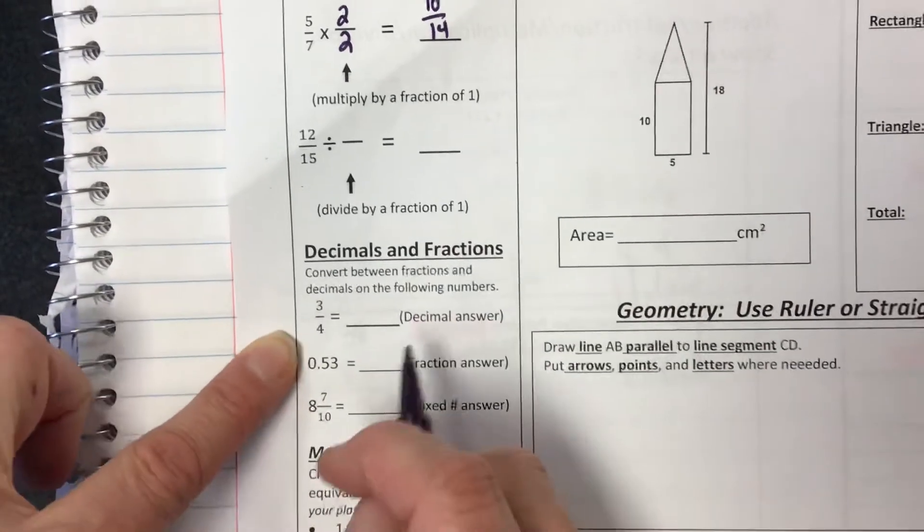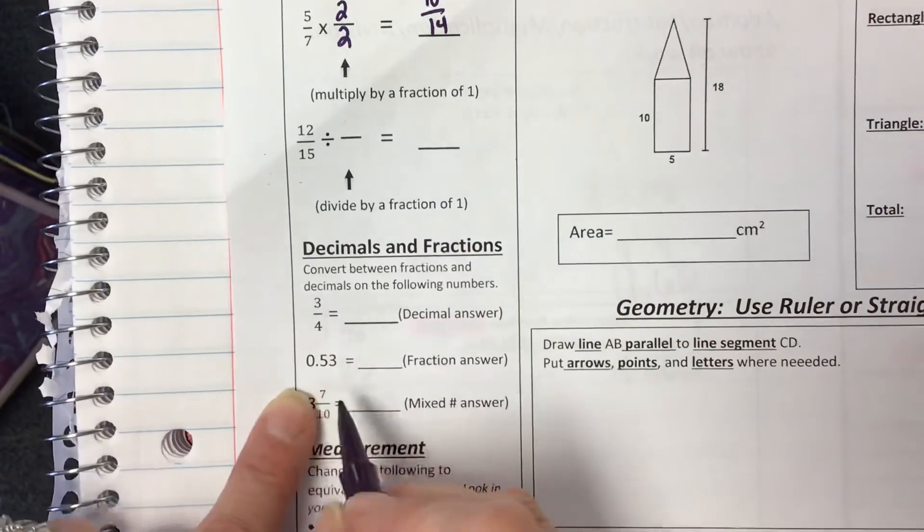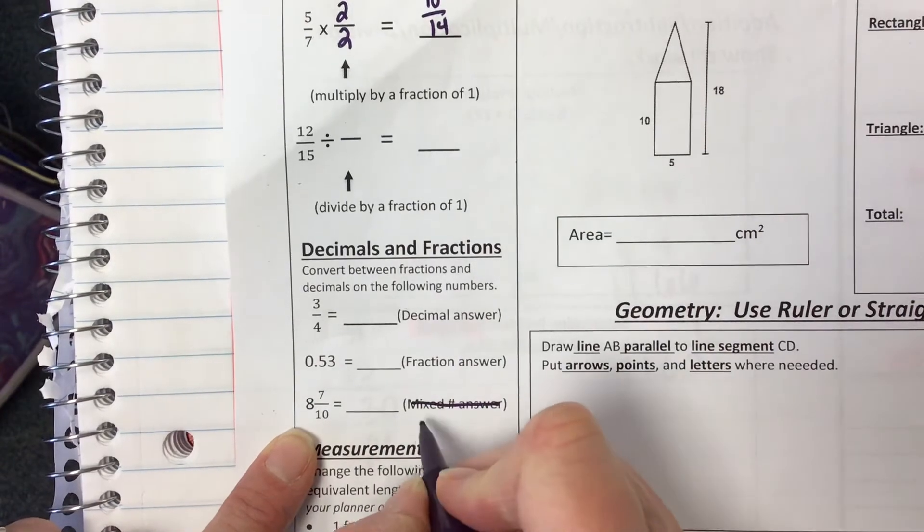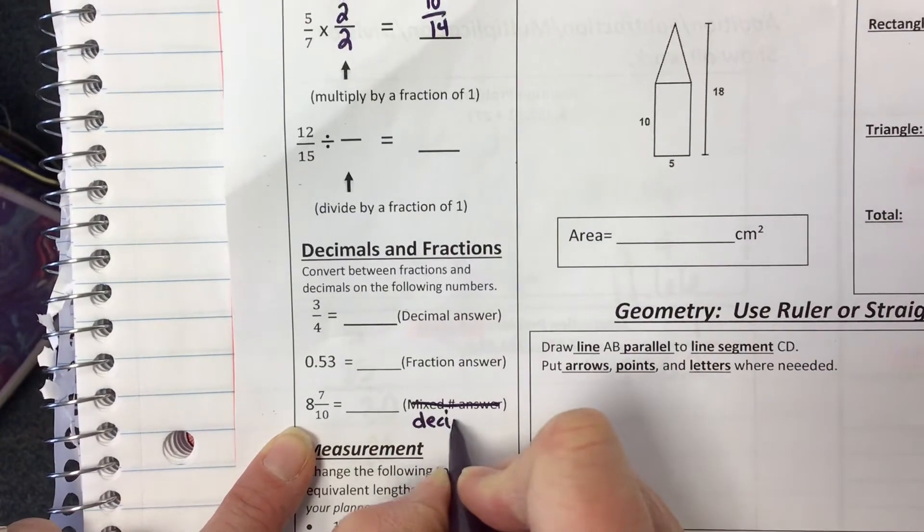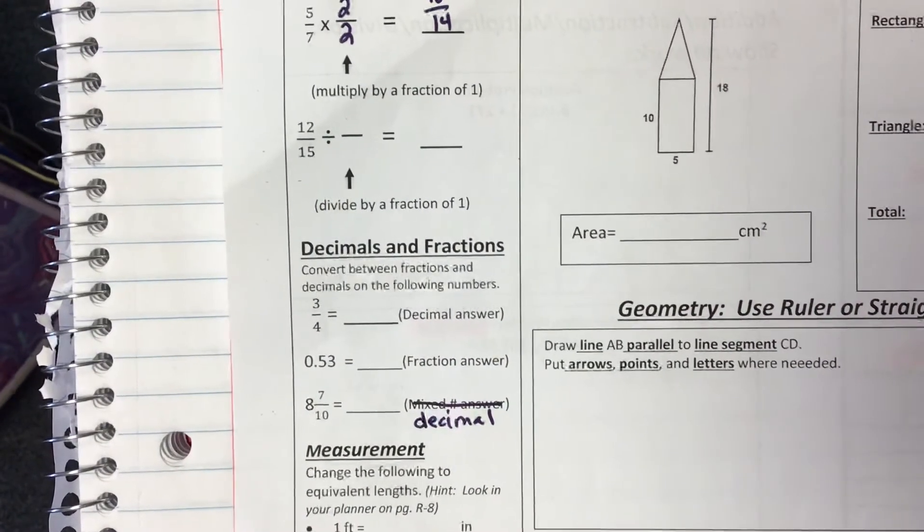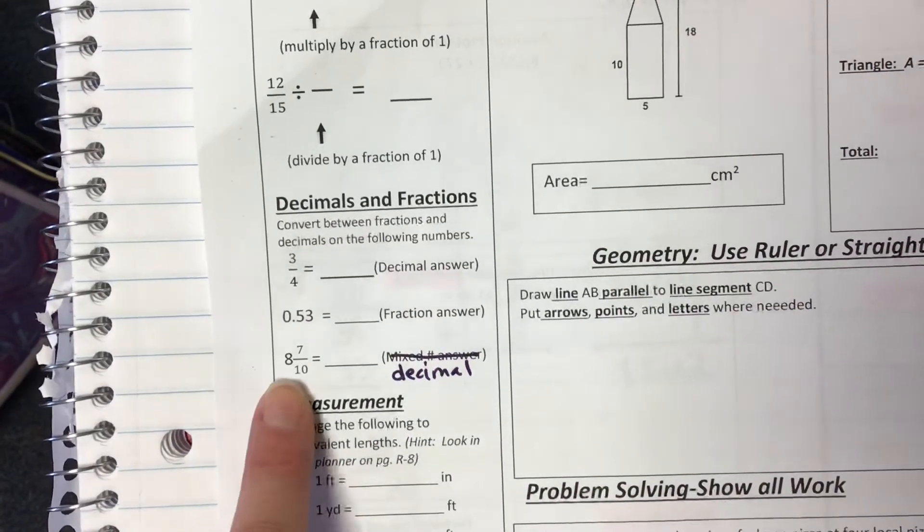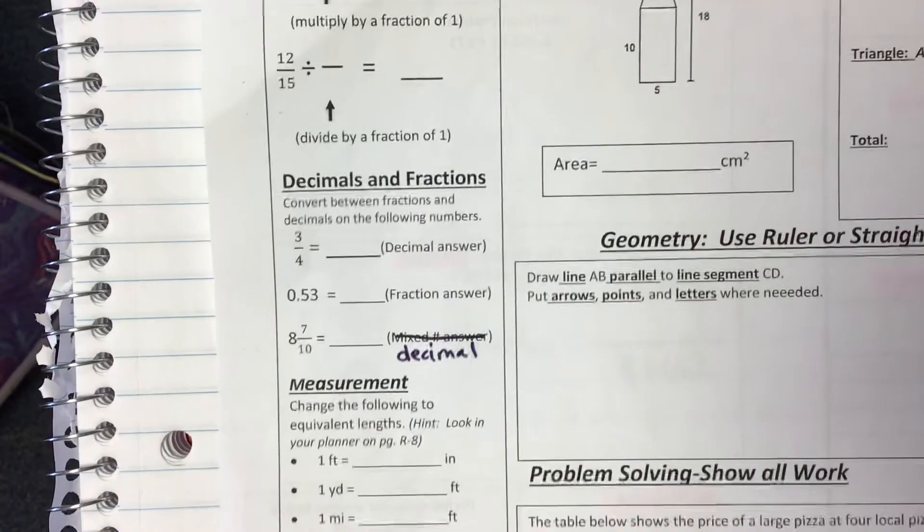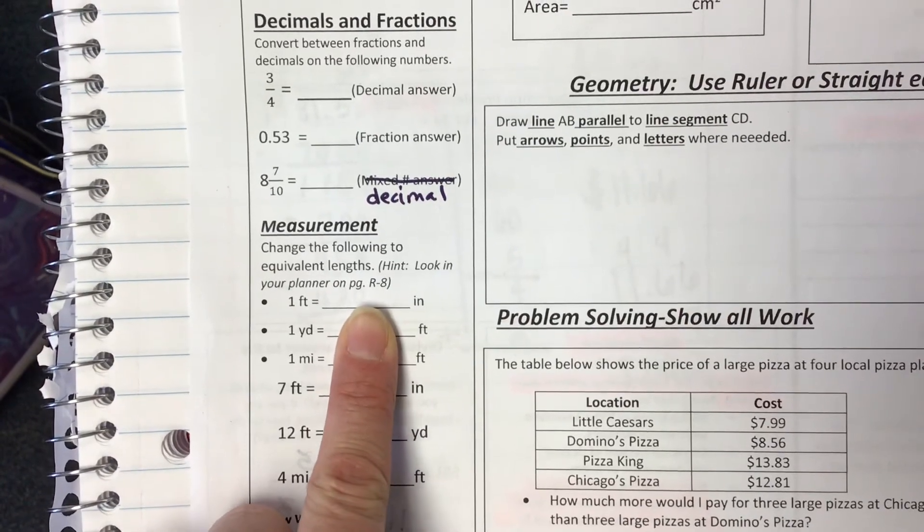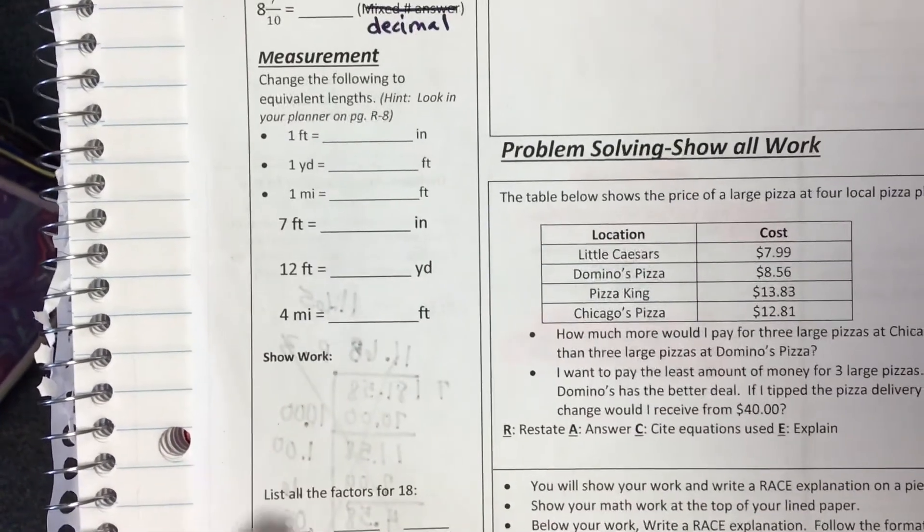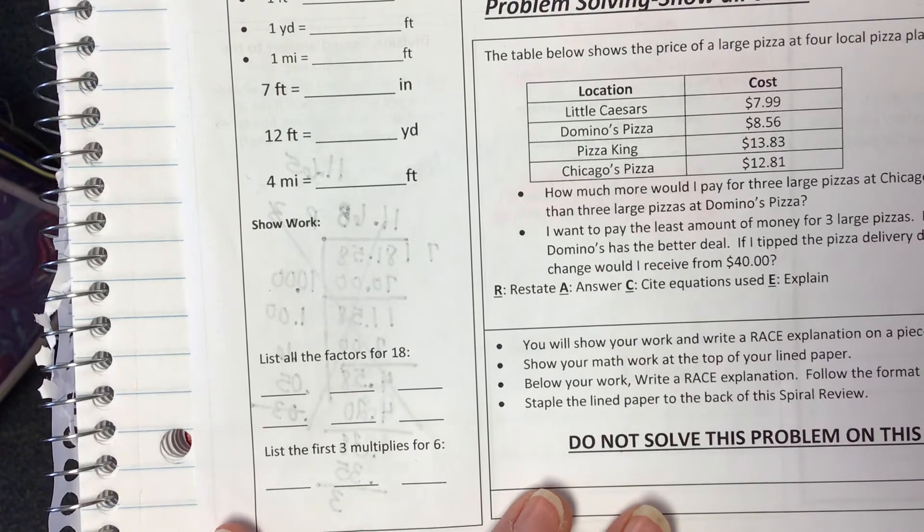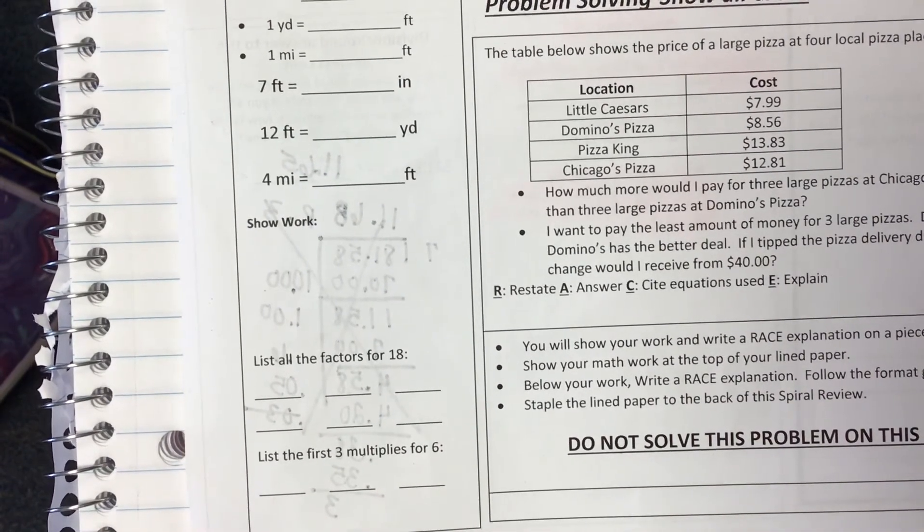Convert. This is where we had a typo. 3 fourths is equal to what decimal? 5,300ths is equal to what fraction? And 8 and 7 tenths, you need to write it as a decimal. Not a mixed number. It's already a mixed number. Not on 8 and 7 tenths. It's a mixed number. Okay, these measurement ones we should be getting pretty decent at. Look in your planner on the reference page 8. You've been looking at it the last couple of weeks. The factor is for 18 and the multiple is for 3. Don't forget the first multiple for 3 is... Oh, sure. The multiple is for 6. The first multiple for 6 is 6.